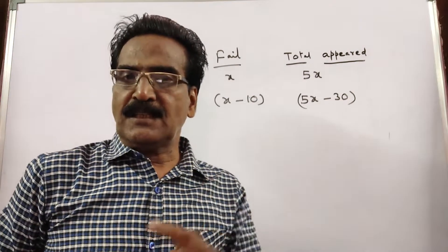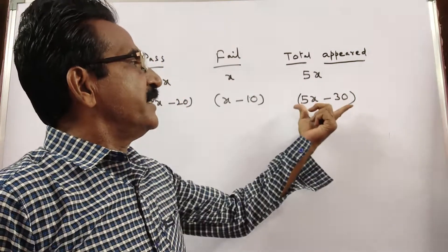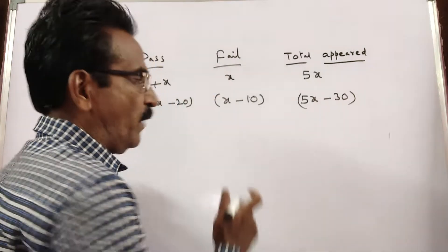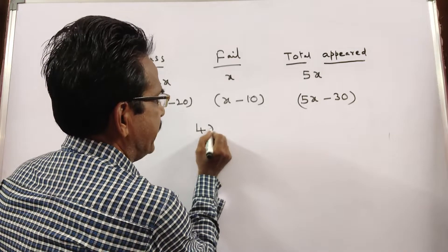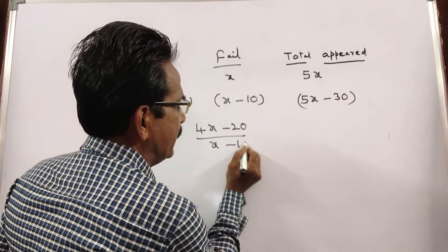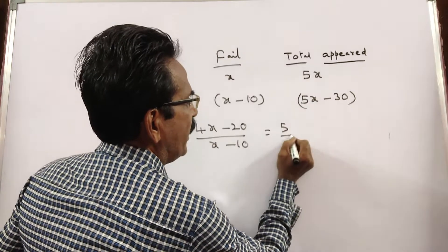So now after this change, the ratio of passes and failures is 5 to 1. So 4x minus 20 to x minus 10 equals 5 to 1.